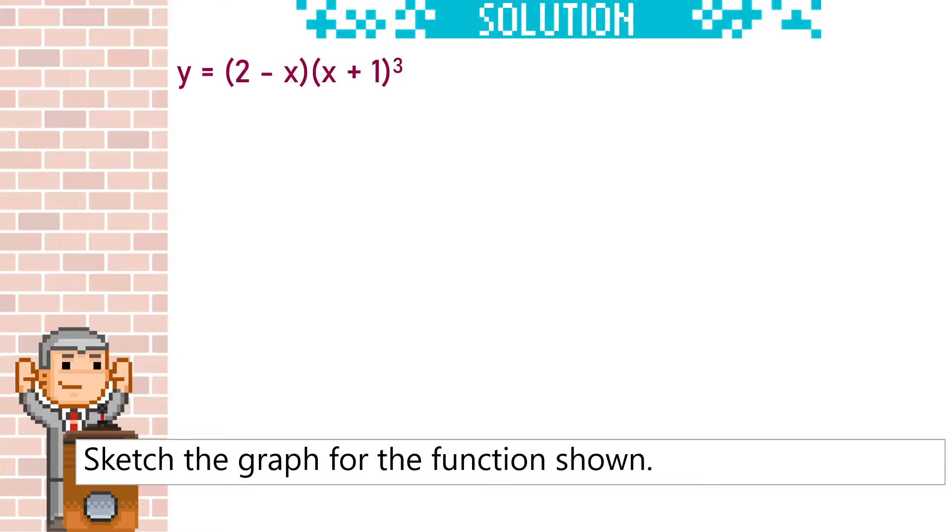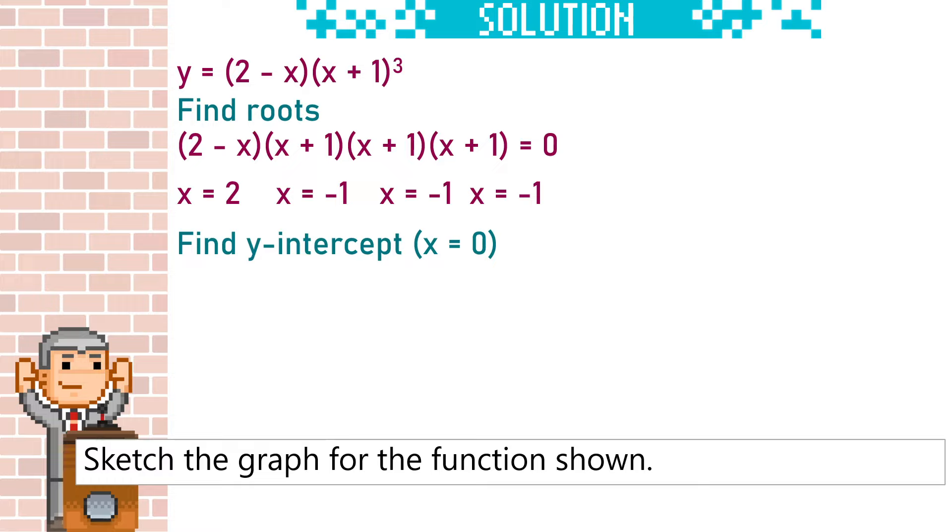We're going to start by solving the equation when it equals 0 to find the roots. Notice that the second bracket is cubed, so it's times by itself 3 times, so we're just going to have that bracket 3 times. Solve by getting each of those brackets equal to 0. Next, to find the y-intercept, we substitute in x as 0, and we see that the y-intercept will be 2.